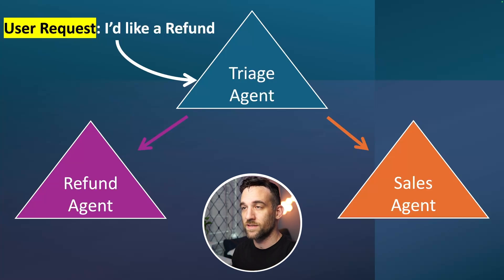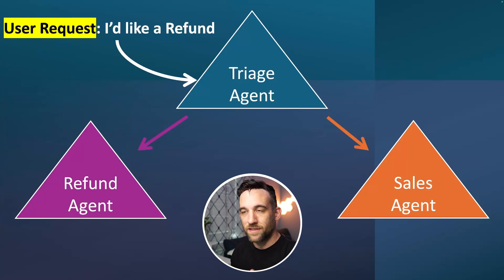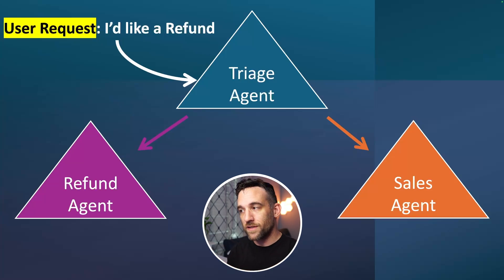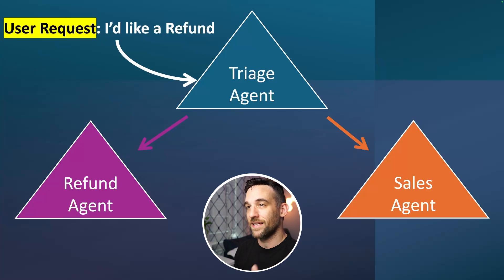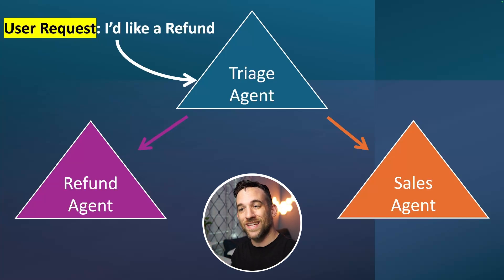Let's say we have a user request that says 'I want a refund.' That's going to be given to a triage agent, which decides whether to transfer to the refund agent or the sales agent. Because it sees a refund request, it transfers to the refund agent. Inside the triage agent, you can give it context variables that can be passed along to the refund agent.